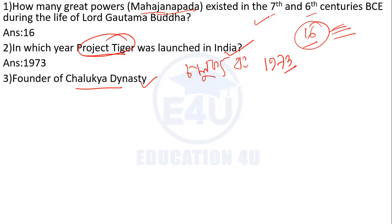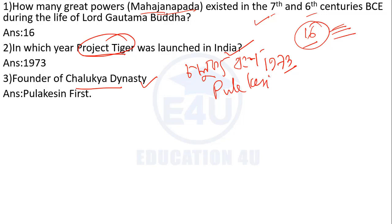Next question: who was the founder of the Chalukya dynasty? The answer is Pulakesi I. Pulakesi I was the founder of the Chalukya dynasty.